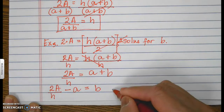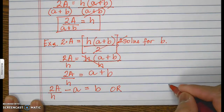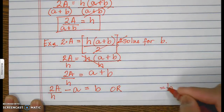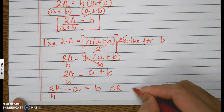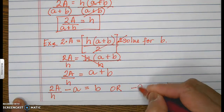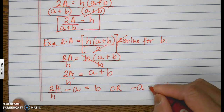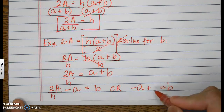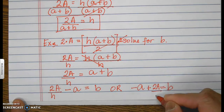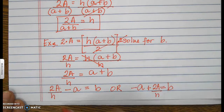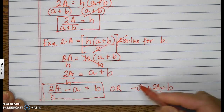There's an alternate form. You can put the negative a in front, giving b equals negative a plus 2A over h. These two forms are the same and both are permitted.